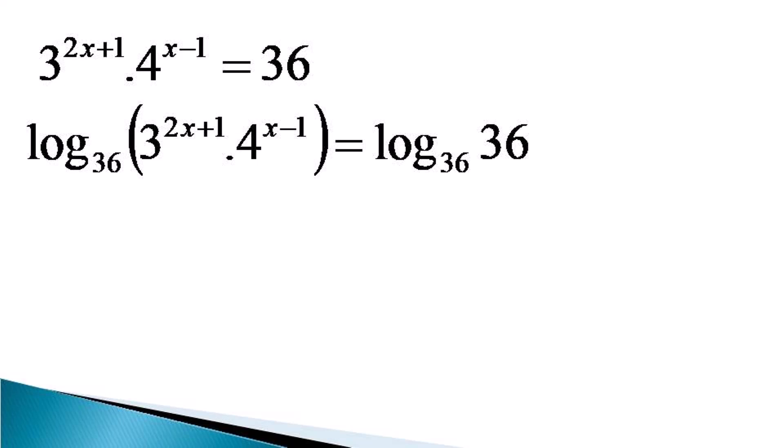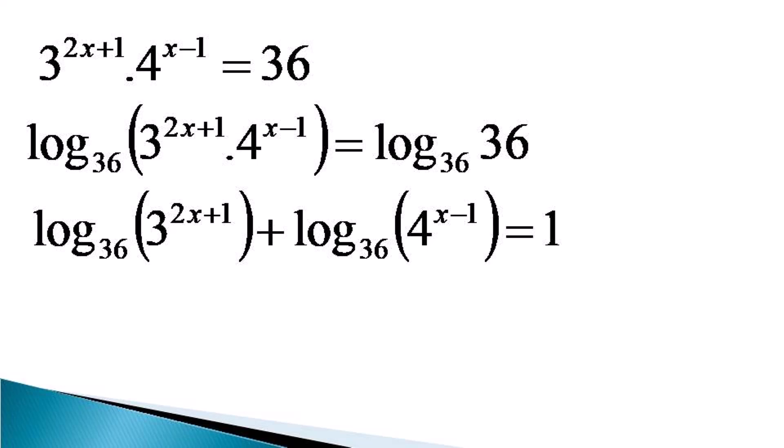So converting the logarithm into the addition of two terms, it becomes log 3 raised to the power 2x plus 1 to the base 36, plus log 4 raised to the power x minus 1 to the base 36, and it becomes equal to 1 as log 36 to the base 36 equals 1.